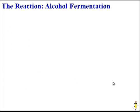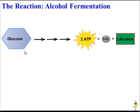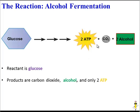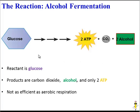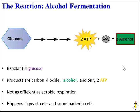The other type of fermentation is alcohol fermentation, and it's pretty similar. The starting material is glucose, and the products are two ATP molecules plus two waste products: carbon dioxide and alcohol. This reaction is not nearly as efficient as aerobic respiration, but it's important because it's what causes bread to rise and is involved in the production of beer, wine, and other alcohols. We see this happening in yeast cells, along with some bacterial cells.